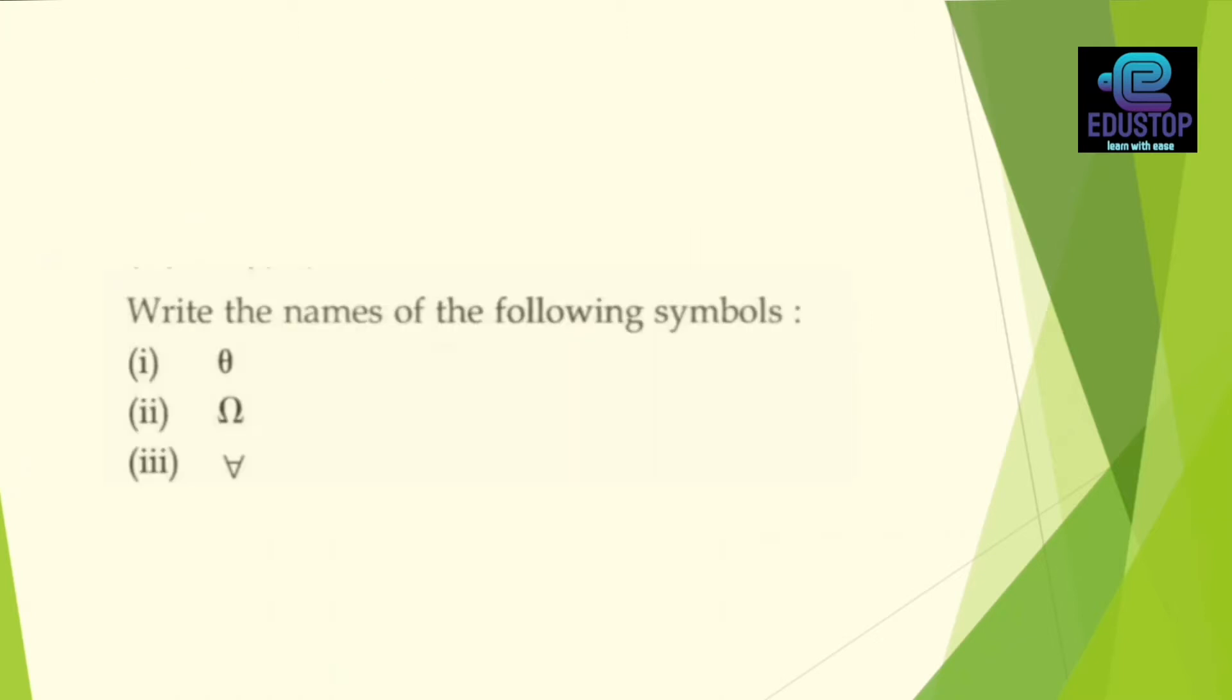Next, there are some symbols given. These questions have come up two to three times. Please tell us the name of these symbols. These symbols are theta, O, omega, and for all. So you should know the names of symbols. If there is every symbol, then all those symbols must be prepared.